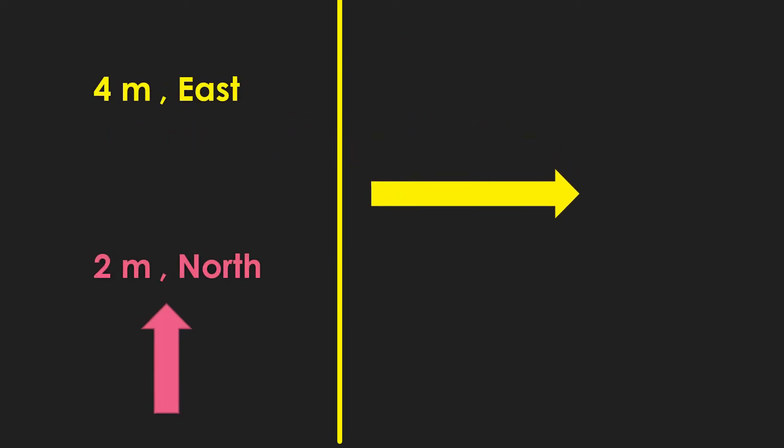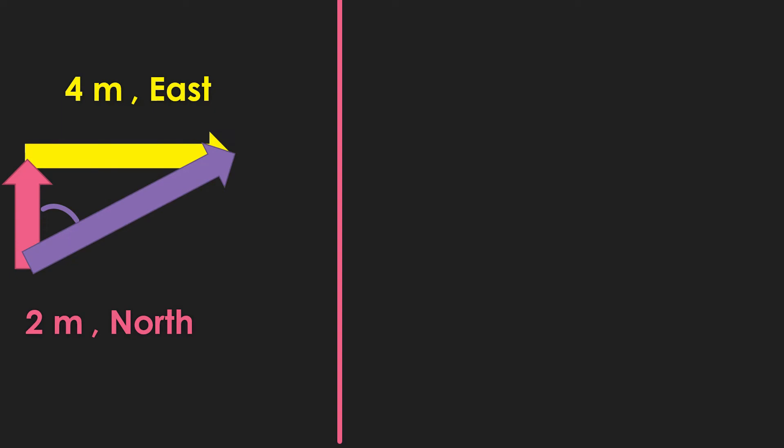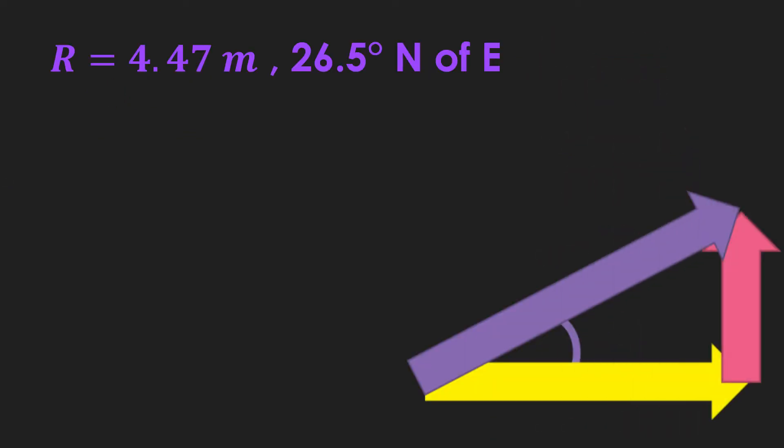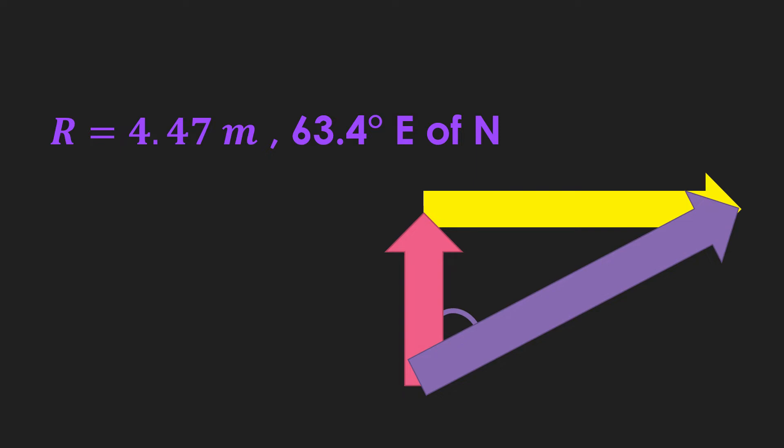But our direction may have a different version. What if we place our y component first in finding the resultant vector? Did it affect the magnitude of the resultant vector? No. Did it move the resultant vector? No. What we're going to do is to represent the direction differently. Now if we draw it this way, where can we find the angle theta? Now it's pointing to the north, so our opposite and adjacent side switches. If you notice, we reverse the direction since we move the angle at the other side. So it's important to be mindful of which component is your opposite and which component is your adjacent side.